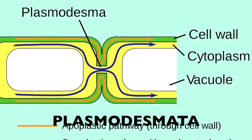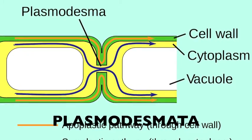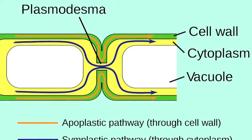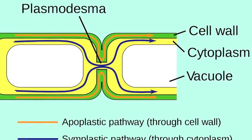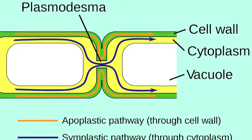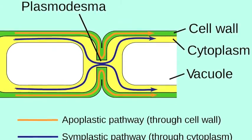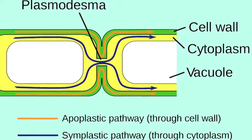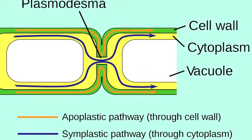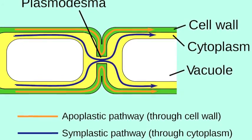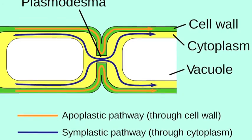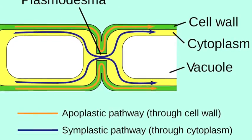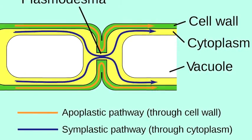Plasmodesmata only occurs in plant cells. During plasmodesmata, microscopic channels traverse the cell walls of plant cells and some algal cells, enabling transport and communication between them. The cell walls are not continuous in plasmodesmata.